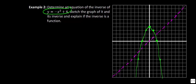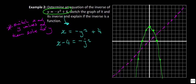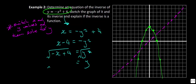Now we're ready to find the inverse relation. The rule of thumb: switch x and y, then solve for y. So I take the equation and write x equals negative y squared plus 4. Moving the 4 gives x minus 4 equals negative y squared. Dividing both sides by negative 1 gives negative x plus 4 equals y squared. Taking the square root of both sides — and don't forget, when you take the square root you get both a positive and a negative — gives y equals plus or minus the square root of negative x plus 4.